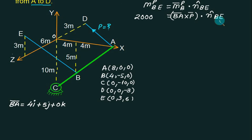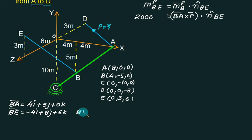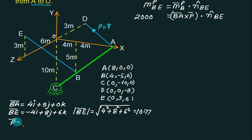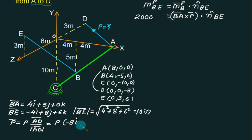Vector BE equals E minus B: 0 minus 4 gives minus 4i; 3 minus minus 5 gives plus 8j; 6 minus 0 gives 6k. Modulus of BE equals square root of 4 squared plus 8 squared plus 6 squared, which equals 10.77. For force P directed from A to D: AD equals D minus A gives minus 8i plus 0j minus 3k, and modulus of AD equals square root of 8 squared plus 3 squared equals 8.54.